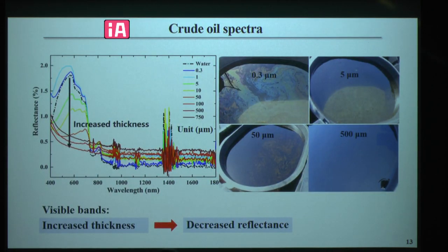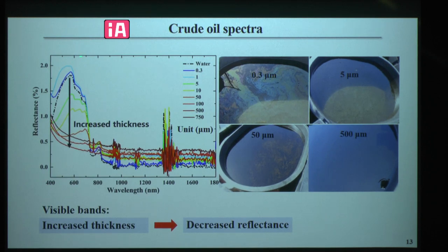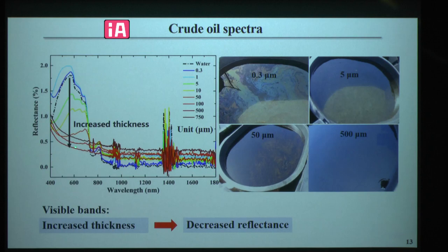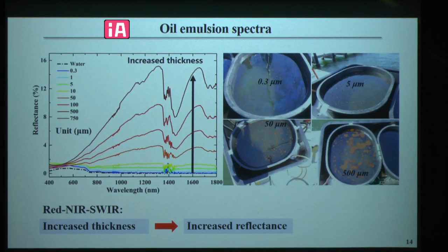Here are the crude oil spectra. Thickness was calculated using input volume divided by tank area. When oil thickness is really thin, oil reflectance is actually higher than water because of Fresnel reflection. When oil thickness reaches 5 microns or thicker, the oil reflectance is lower than water in the visible wavelengths. With increased oil thickness, the reflectance decreases. There is little contrast in the near-infrared and shortwave infrared for emulsion.